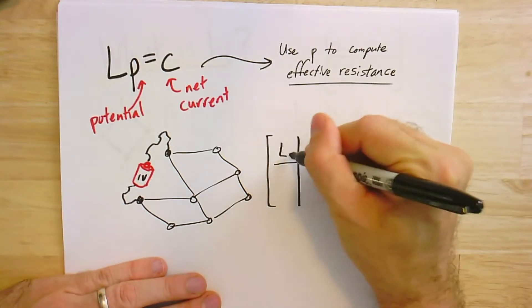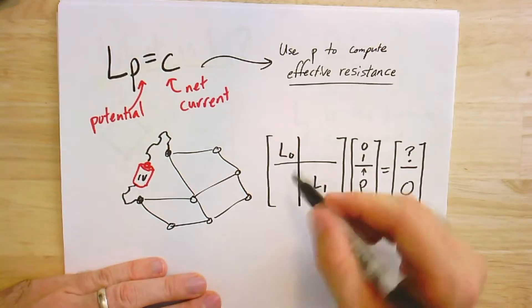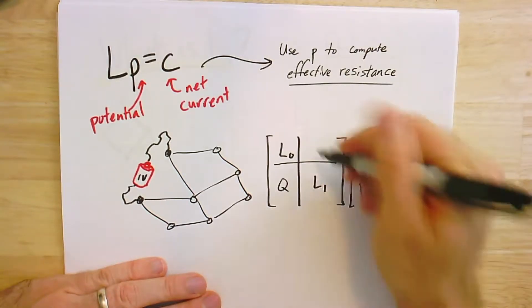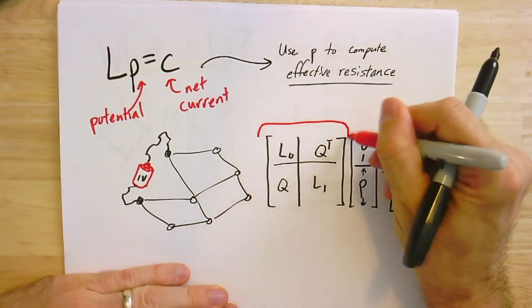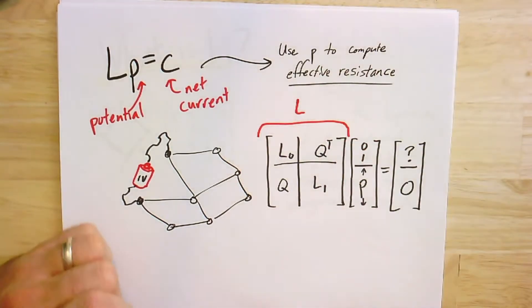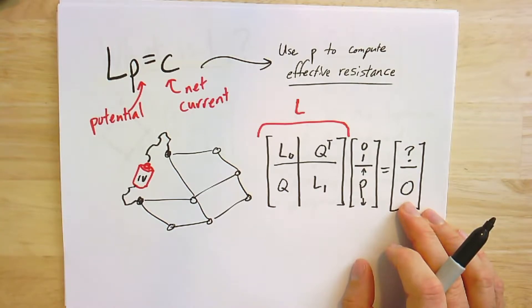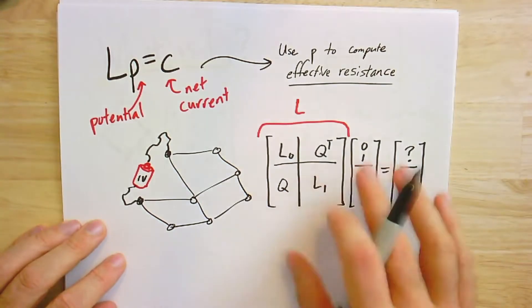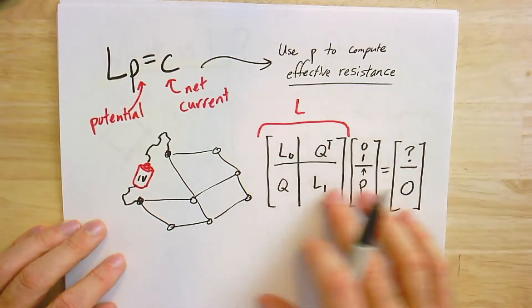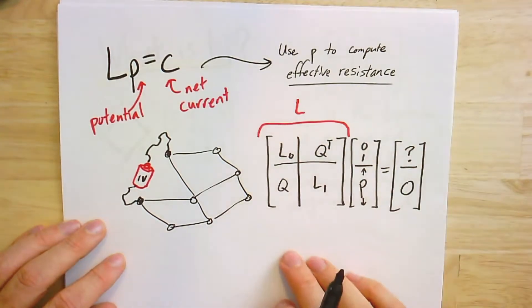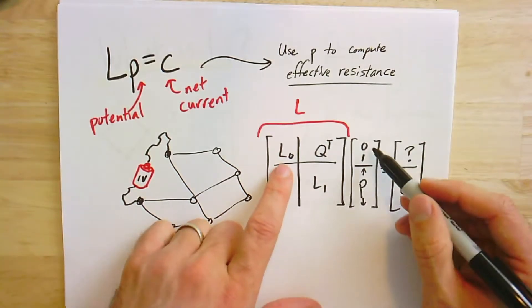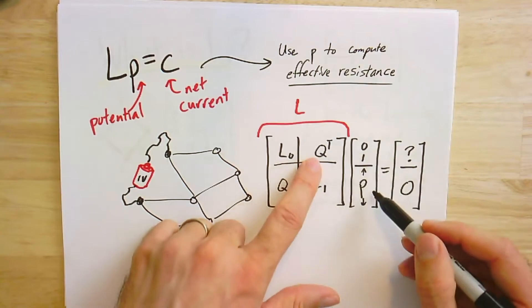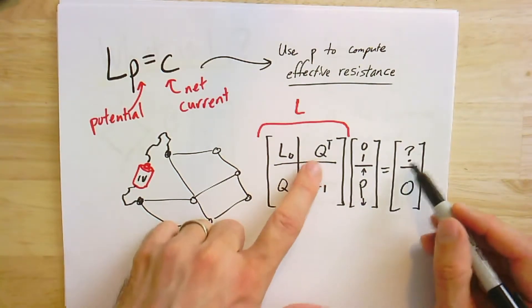I might as well break this into blocks as well. So let's call the first one L0, and this L1, and then there's some other stuff. Just to give it a name, let's call it Q. It's a symmetric matrix, so this is Q transpose. So again, don't be mistaken—this entire matrix here was our Laplacian for this graph. Once I've broken my matrix up blockwise, one of the nice things about matrix multiplication and breaking matrices up into blocks is that you can just pretend that the blocks—you just treat the blocks individually.